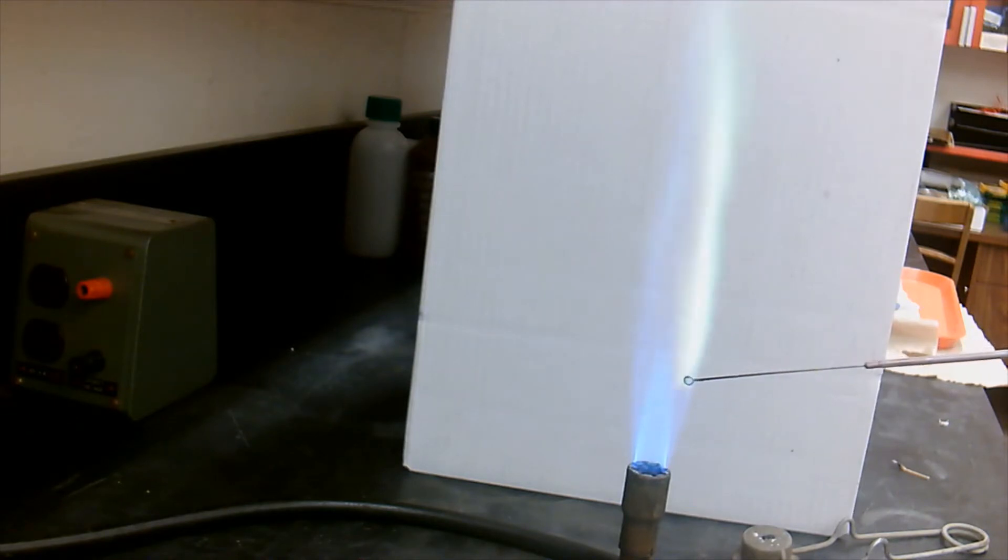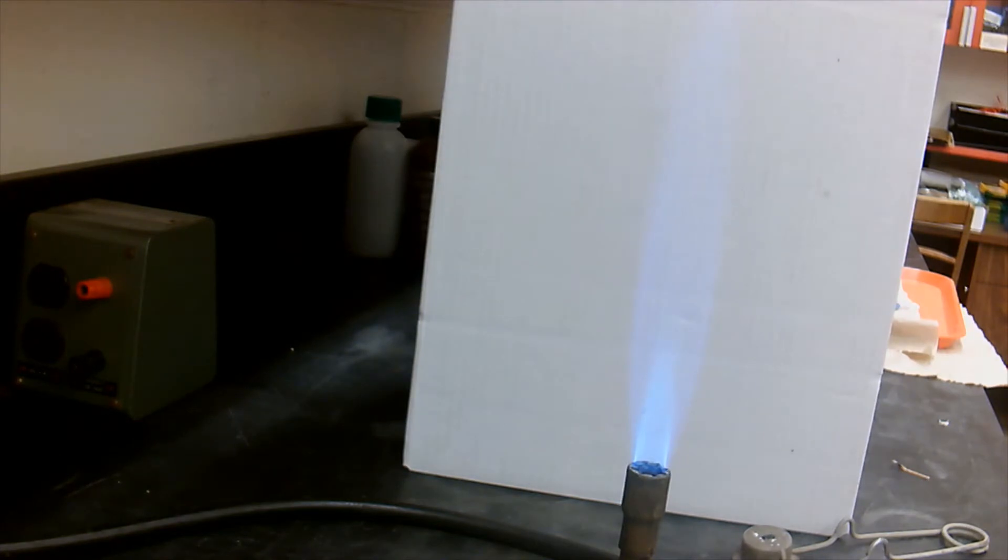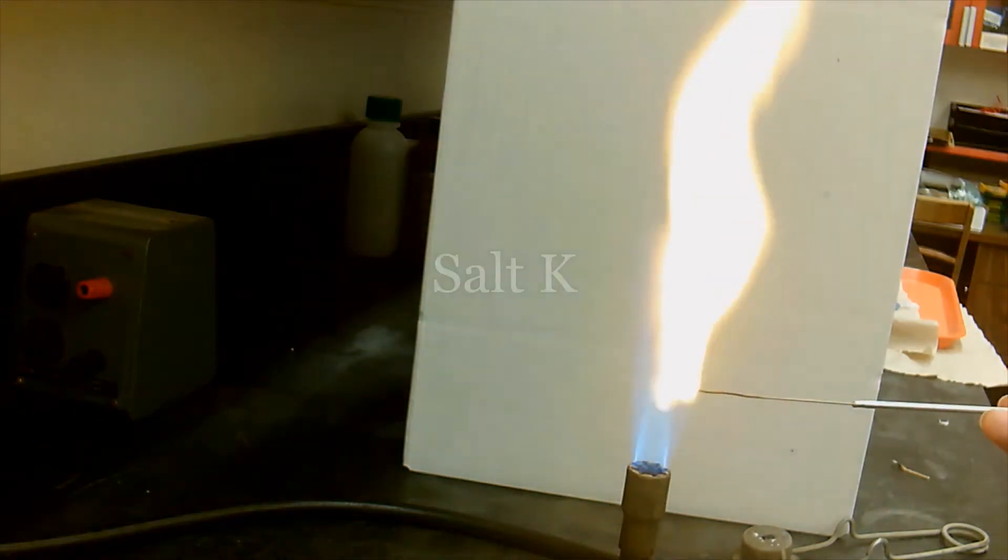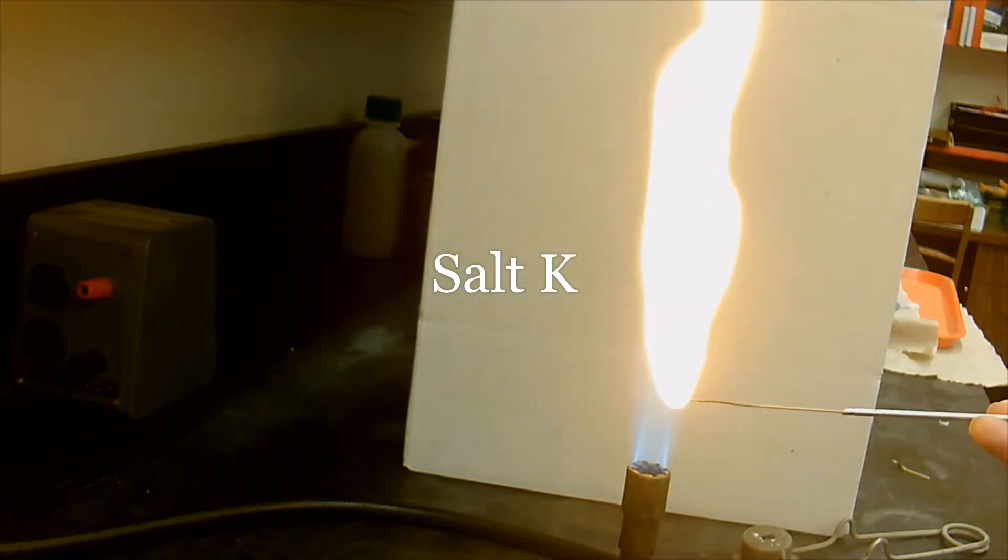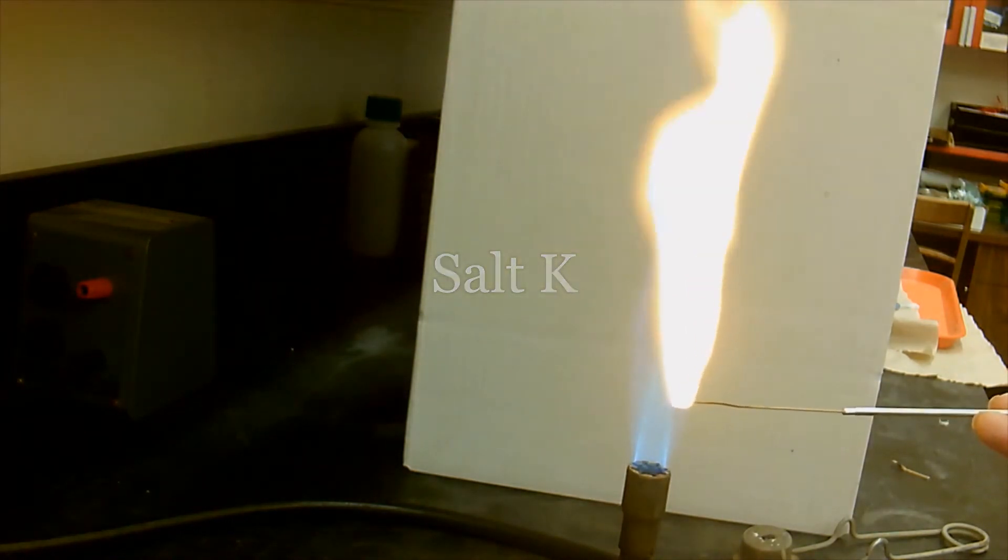So this is our salt J. It's our salt J, green. Let's go on with our salt K. This is our salt K. It's a bright orange.